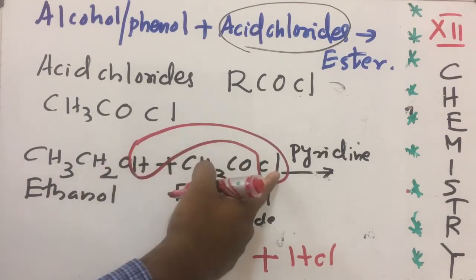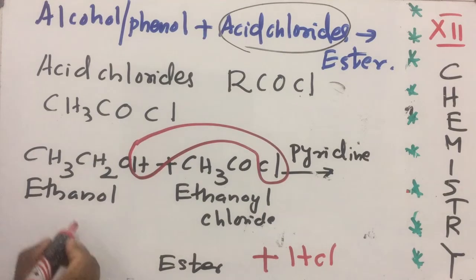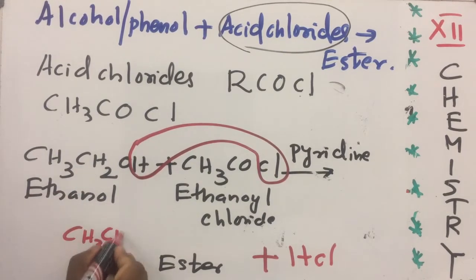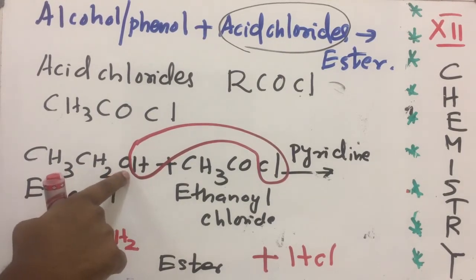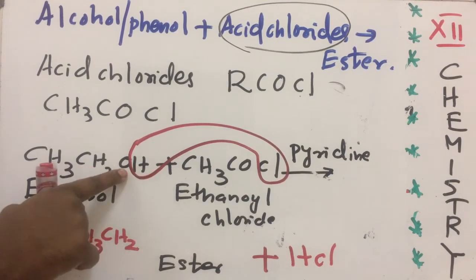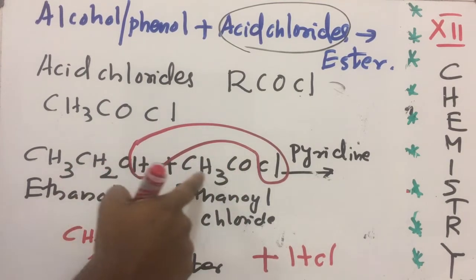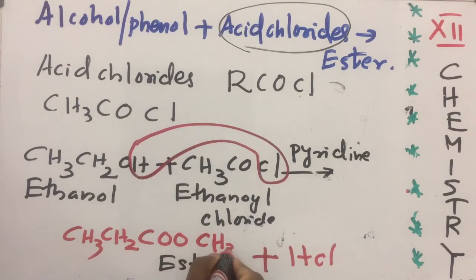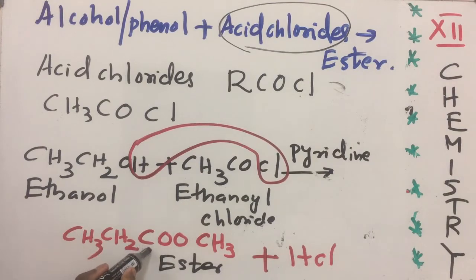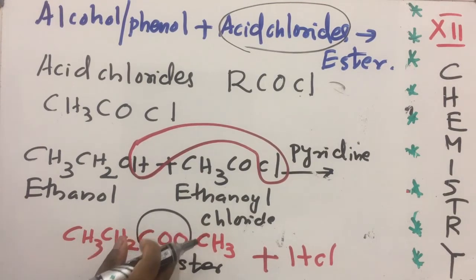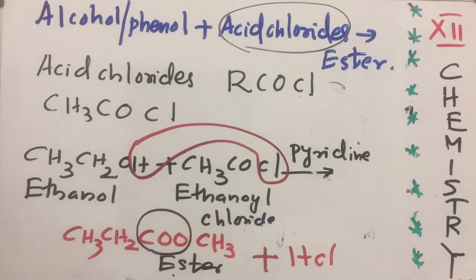After removing HCl, what remains is CH3CH2–O–CO–CH3, written as CH3CH2OOCCH3. This compound is called an ester because its functional group is COO. Organic compounds containing the functional group COO are called esters. The IUPAC name of this ester is ethyl ethanoate.